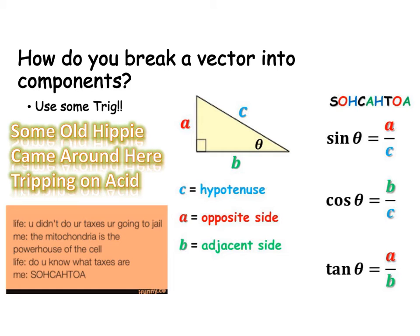Alright, so in order to break a vector up into components, if you're given the hypotenuse, how do you find your x and y values? Basically, what you want to do is you want to use SOHCAHTOA. So I was always told this little mnemonic right here. So if you like that one, you can use it. If you have a different one, you can use that. Okay, so basically, you're just trying to figure out what you don't have. And then, based on that, you're going to pick one of our trig functions to find your unknown.